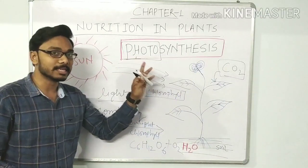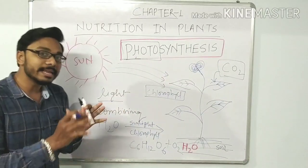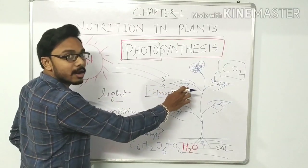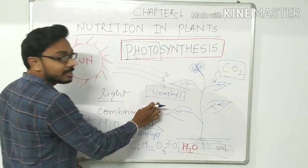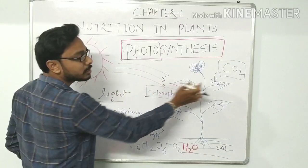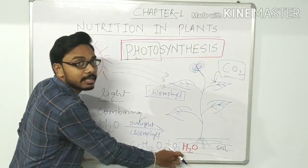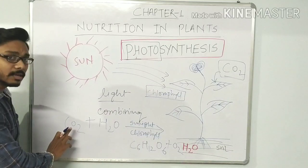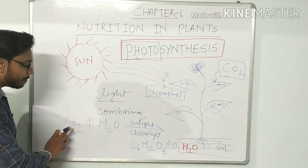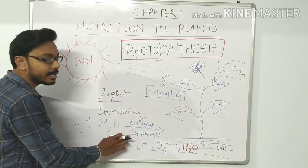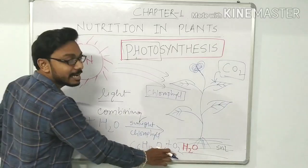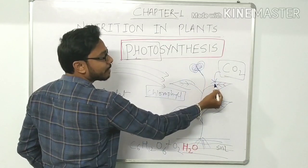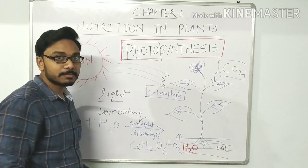So photosynthesis means combining light with the green leaves to prepare food for the plant. The green leaves have chlorophyll — the green pigment — and when sunlight falls, they accept carbon dioxide from the atmosphere and water from the soil to prepare glucose. Photosynthesis takes place with the help of carbon dioxide and water in the presence of sunlight and chlorophyll for the preparation of glucose, and it eliminates oxygen as a byproduct. The plant takes in carbon dioxide and gives out oxygen.